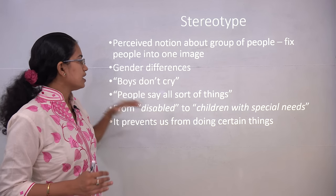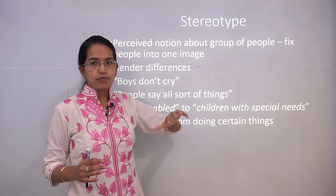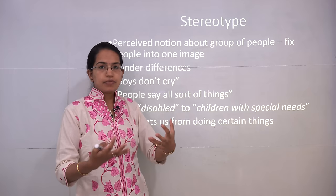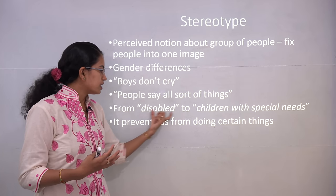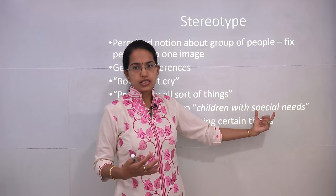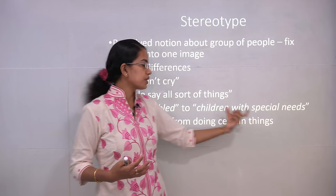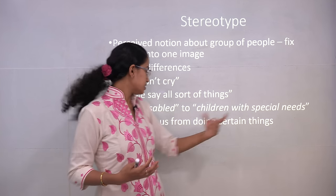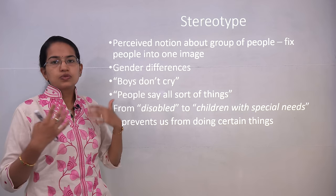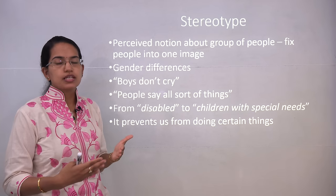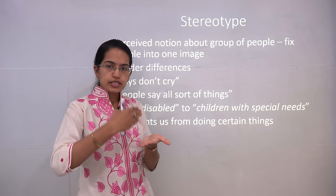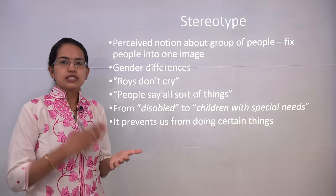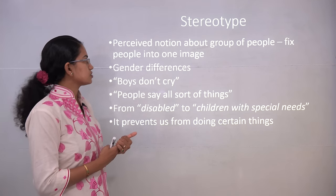Another kind of stereotype is when people say all sorts of things about someone — a statement that could be heard from a disabled child. Now, the word 'disabled' has been shifted to 'children with special needs,' giving priority to them. We no longer use the word 'disabled'; we use 'children with special needs.' The discrimination that has been created is primarily due to the stereotypes and prejudice that exist in society.